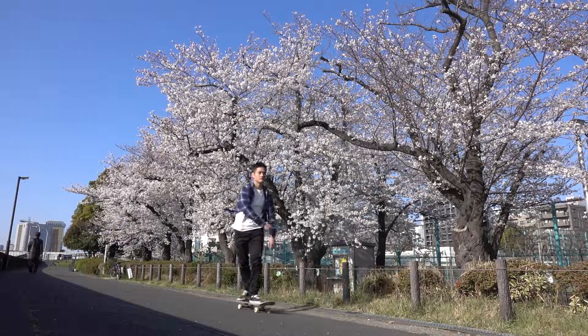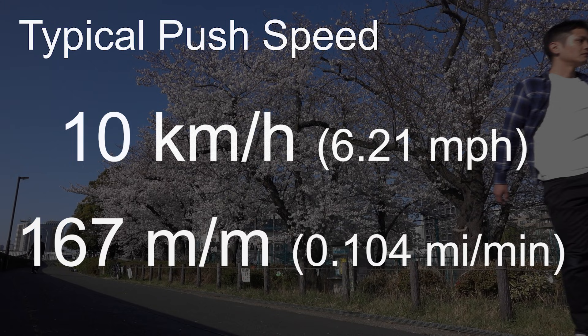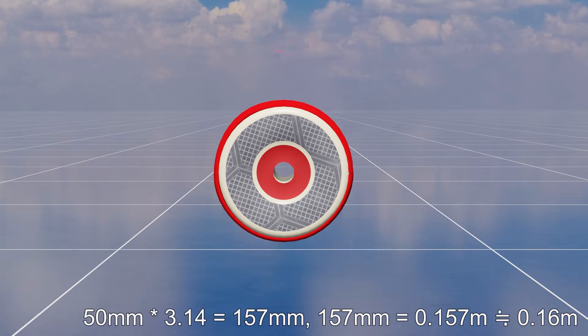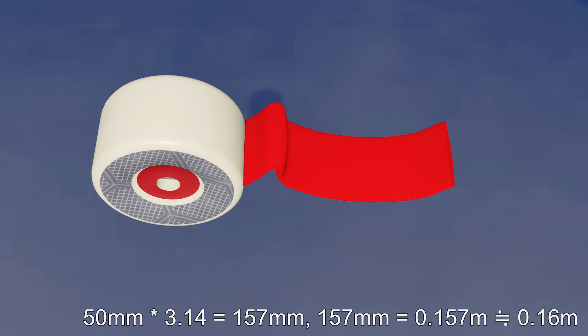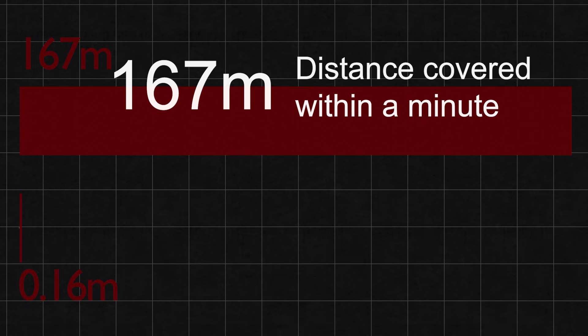A typical push in skateboarding is about 10 kilometers per hour, which is roughly 167 meters per minute. If you use a 50mm wheel, the distance it covers in one rotation is roughly 0.16 meters. Again, the distance we cover in a minute by pushing normally is 167 meters.